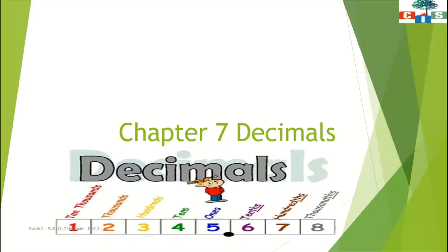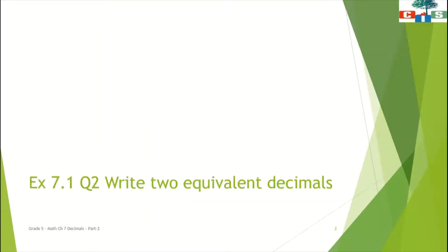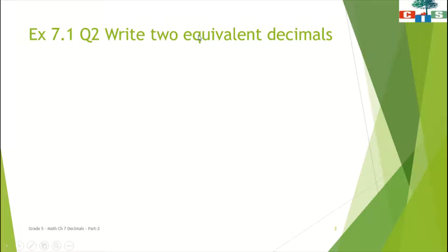So are you all ready? We will start with question number 2 of exercise 7.1. We have to write 2 equivalent decimals for the given decimal. So first of all, we will see what are equivalent decimals.